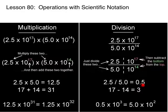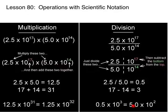This number is not in scientific notation. Right now we have 0.5 times 10 to the 3rd, but we have to move this decimal here one place, so that's going to be 0.5 times 10 to the 2nd.